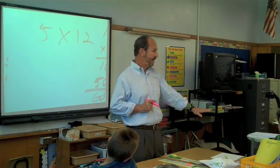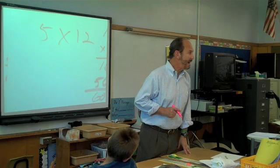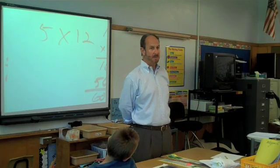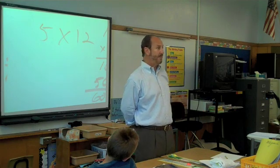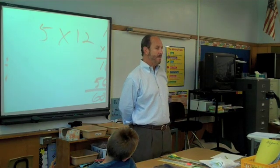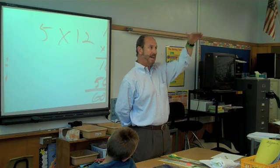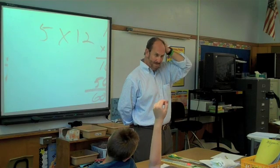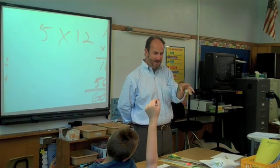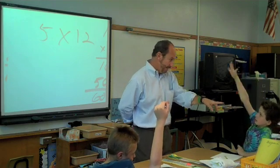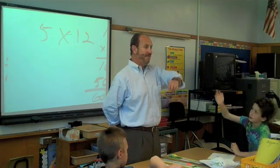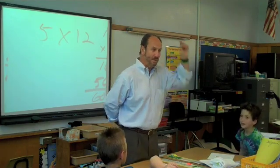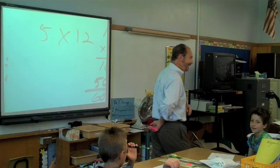Let's use Bart's strategy. How much would five times thirteen be — no paper or pencil. Five times thirteen in your head using Bart's method: five tens and five threes. Five tens is fifty. And five threes is fifteen. How much is fifty and fifteen? Sixty-five. Oh, it works all the time!